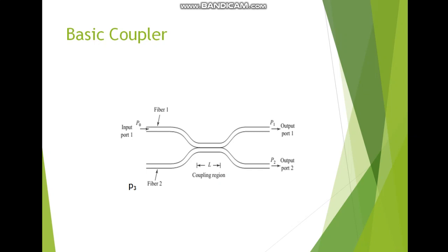This is the diagram of the basic coupler. We have 2 input ports and 2 output ports. Input port 1 is fiber 1, which transmits the first optical signal with power denoted as P0. At the output side there is port 1 with power P1 and port 2 with power P2. In between we have the coupling region where 2 optical fibers are used. In fiber 2, the power launched is P3, whose significance we will discuss later.